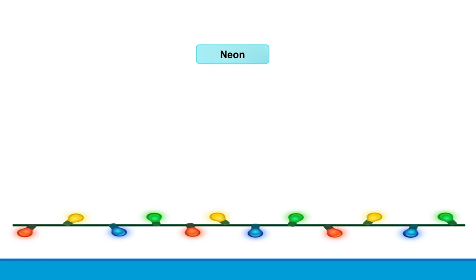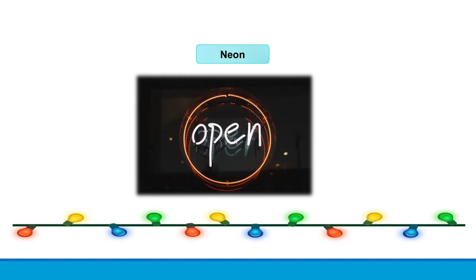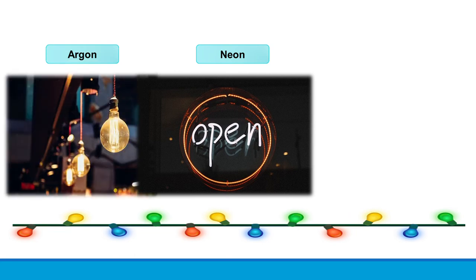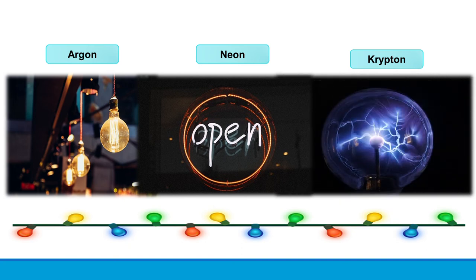Neon gases are used in advertising signs during the night hours. Argon gas are used to fill the light bulbs which are to prevent hot tungsten filaments from oxidizing. Neon, krypton along with combination of other noble gases like argon and neon are used to make plasma lamps.